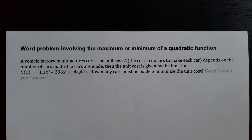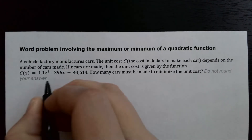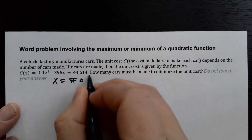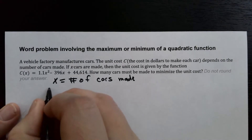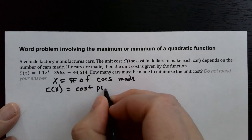In this problem we have a vehicle factory that manufactures cars. The unit cost C, in dollars, to make each car depends on the number of cars made. If X cars are made, the unit cost is given by this function C of X. So X is equal to the number of cars made, and C of X is the cost per car.